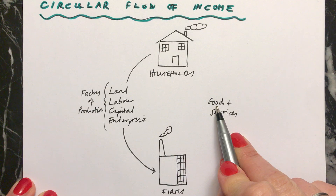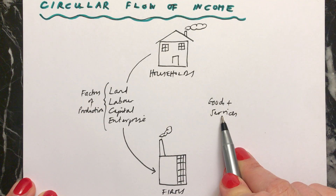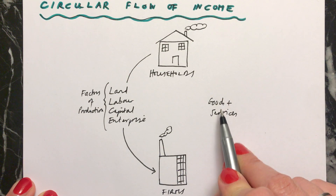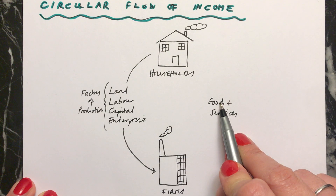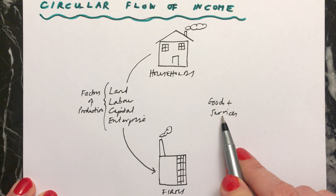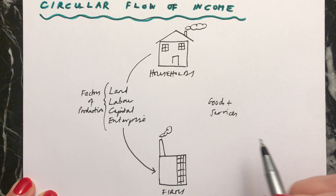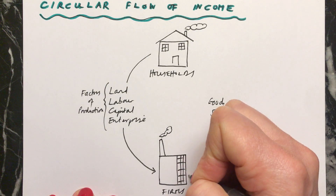Remember, goods are things which are tangible, and services are things which are intangible. Tangible things — which are goods — you can touch, and intangible you can't touch. So a good might be something like a table, because you can touch that, but a service might be something like a haircut or a trip to the cinema — you can't touch that.